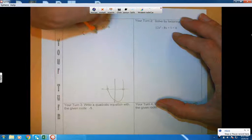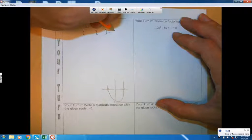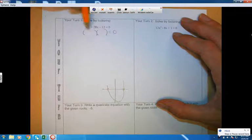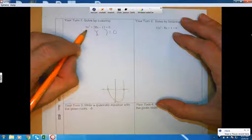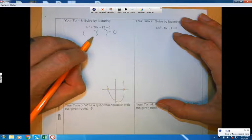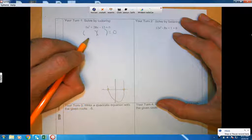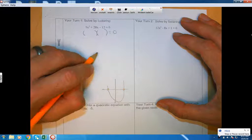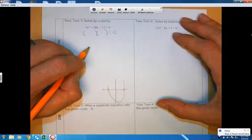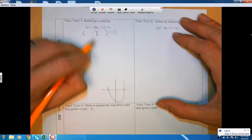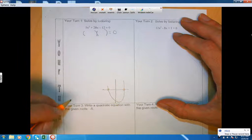So factoring in general is taking something that looks like this and turning it into a form that looks like that. So we want to get it into parentheses, and each one of these parentheses are called the factors. So we're going to solve, we're going to figure out where this hits the ground by making it look like that.